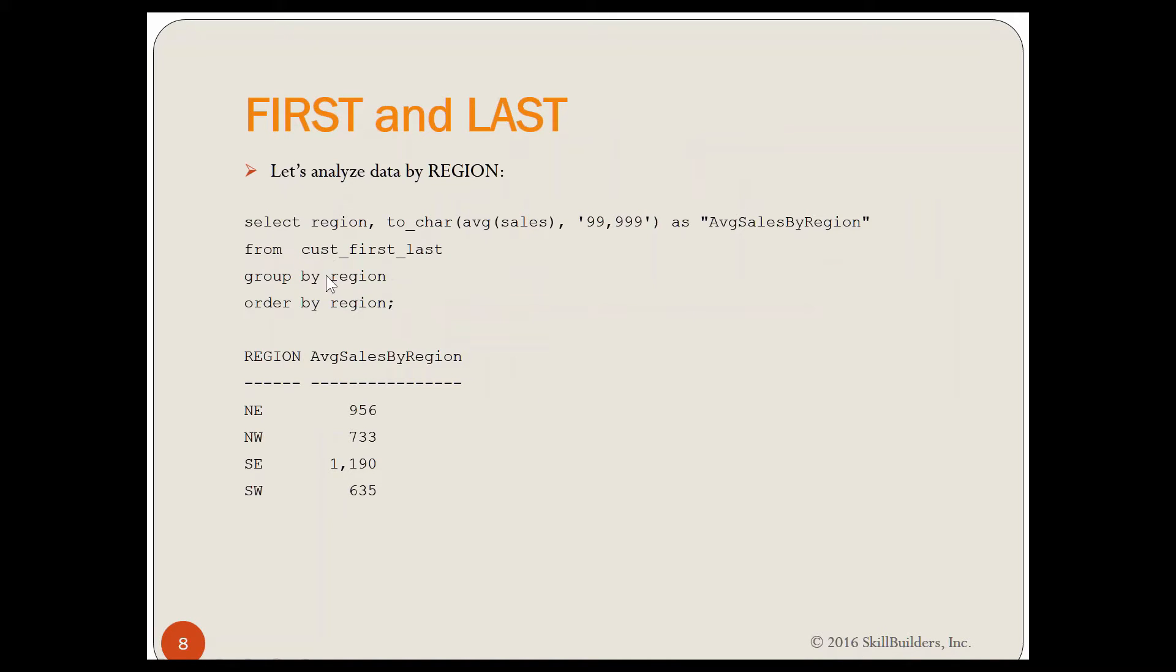Let's look at some data. I have a table called cus first, last. I'm going to group by region, and I'm going to get the average sales. Here's my average sales for my four regions. 5.56, 7.33, 11.90, and 6.35. Okay, fairly standard, nothing unusual there.